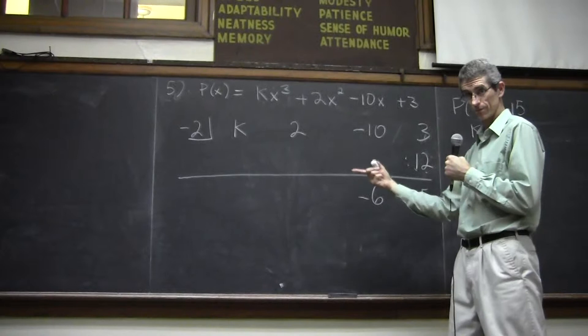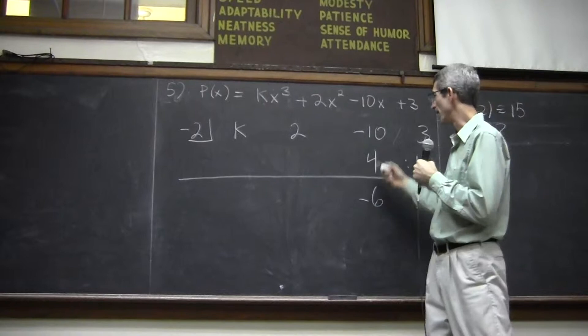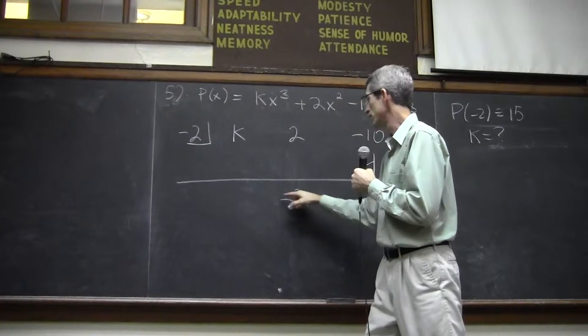Then where did negative 6 come from? Well, I had to combine negative 10 plus something to get to negative 6. So negative 10 and 4 would get me there. Now, where did 4 come from? Well, it came from negative 2 times negative 2. Get your 4. So far, so good.